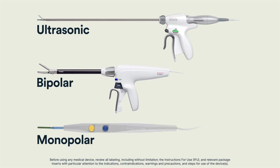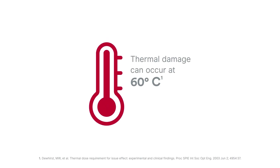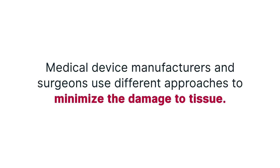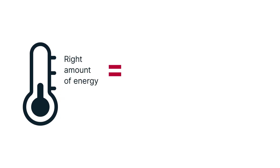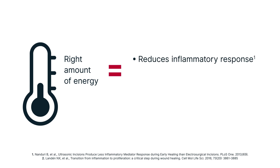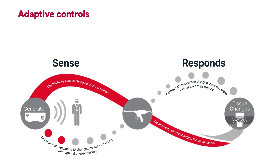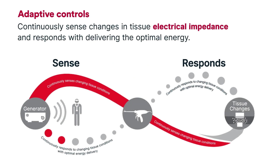Heat Management Techniques. As previously mentioned, all energy devices use heat to achieve a tissue effect, which also damages the tissue. In general, irreversible tissue damage occurs quickly above 60 degrees Celsius. Therefore, medical device manufacturers and surgeons use different approaches to minimize the damage to tissue. Energy device manufacturers focus on developing instruments that deliver the right amount of energy for the desired tissue effect. Lessening the impact on tissue reduces the inflammatory response, which may result in less pain and faster healing. To help accomplish this, some energy device manufacturers use algorithms to detect changing tissue conditions and alter energy output to minimize thermal damage.